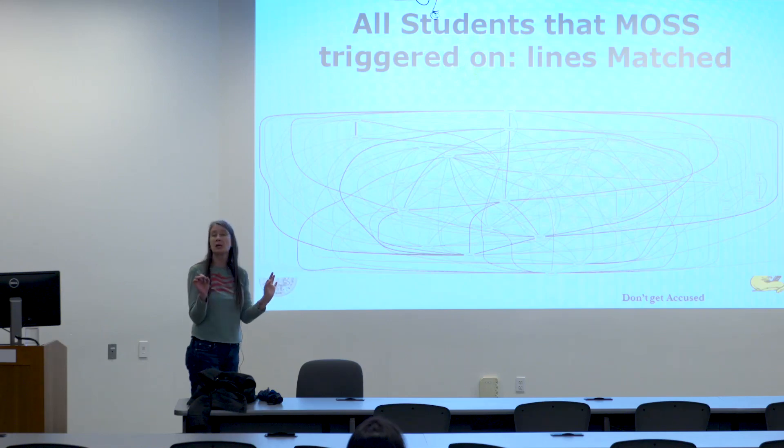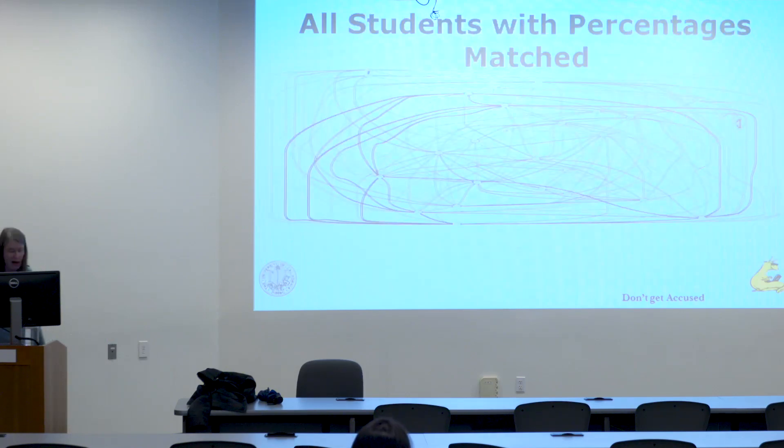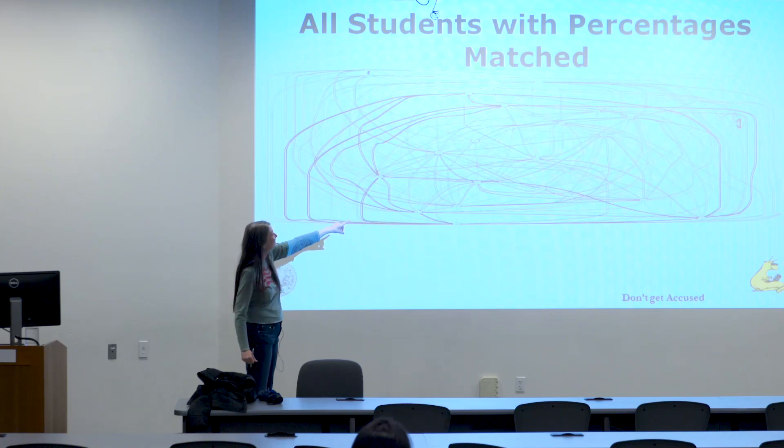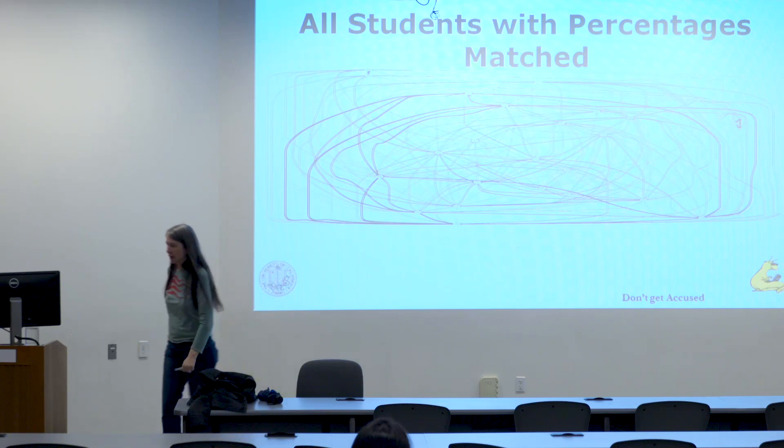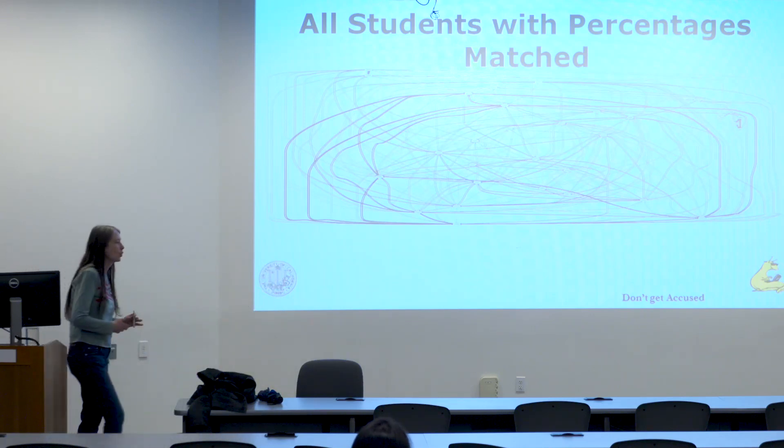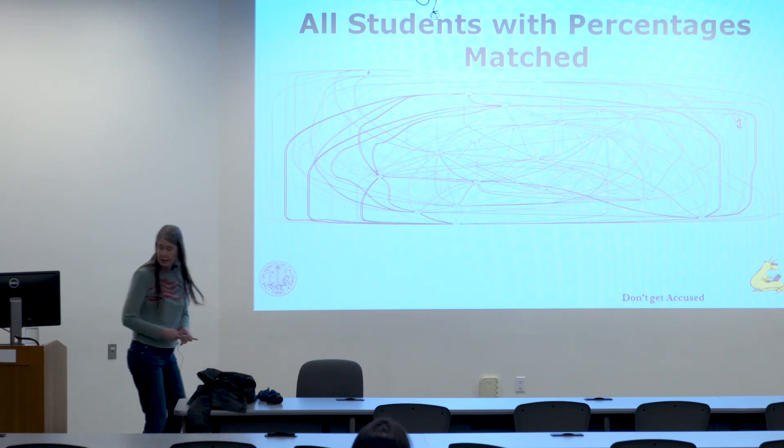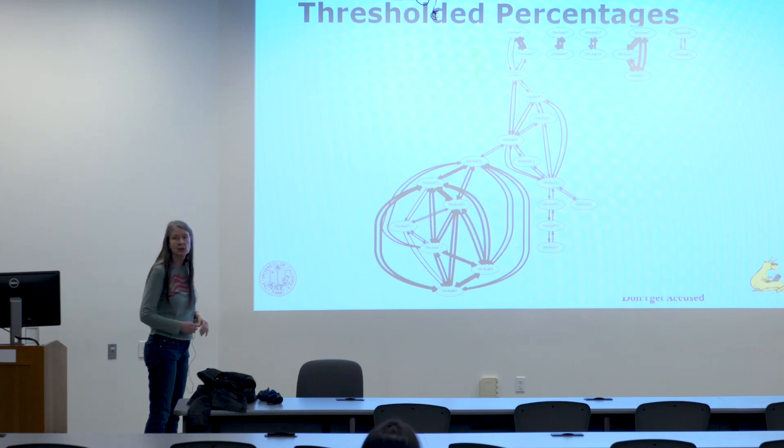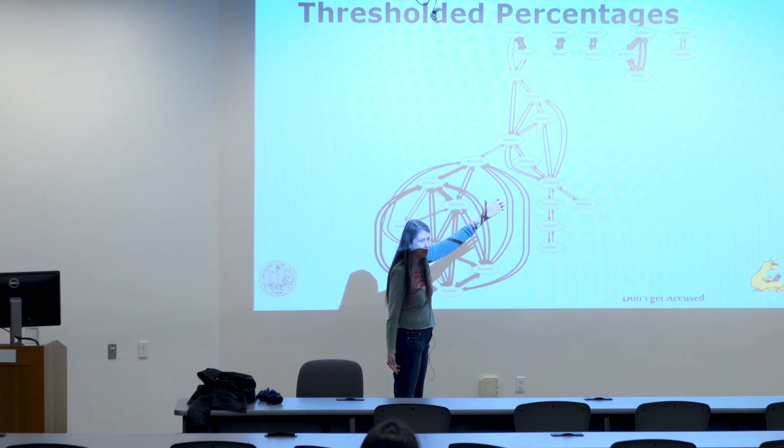So for example, this was from a class with about 150 students. And each one of these little circles is, it says student 001 or student 003. So once again, anonymized. But you can see there aren't that many names. So this was a real programming assignment. 150 students did the programming assignment. And these are the only students for which MOSS had anything to say. There wasn't even one percent code match for all the names that don't appear on there.